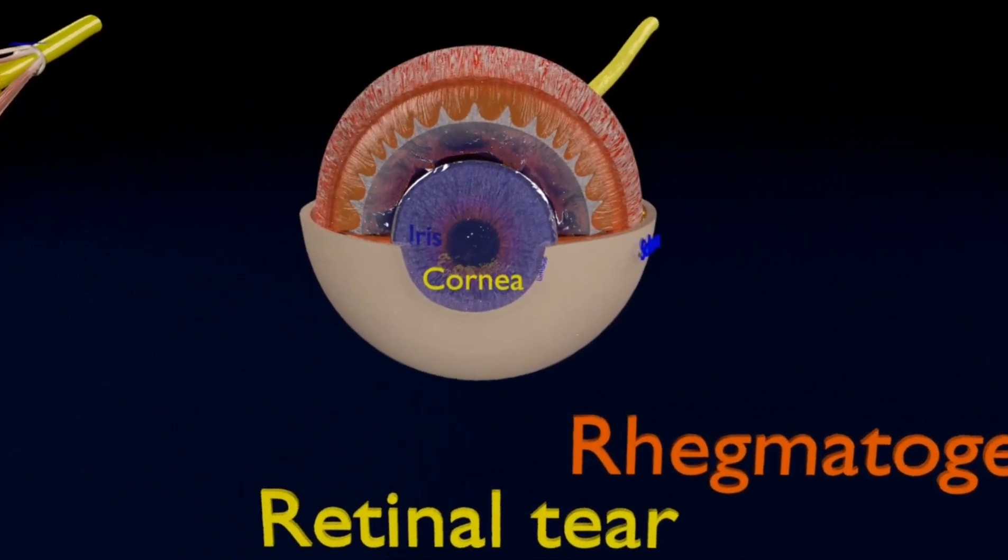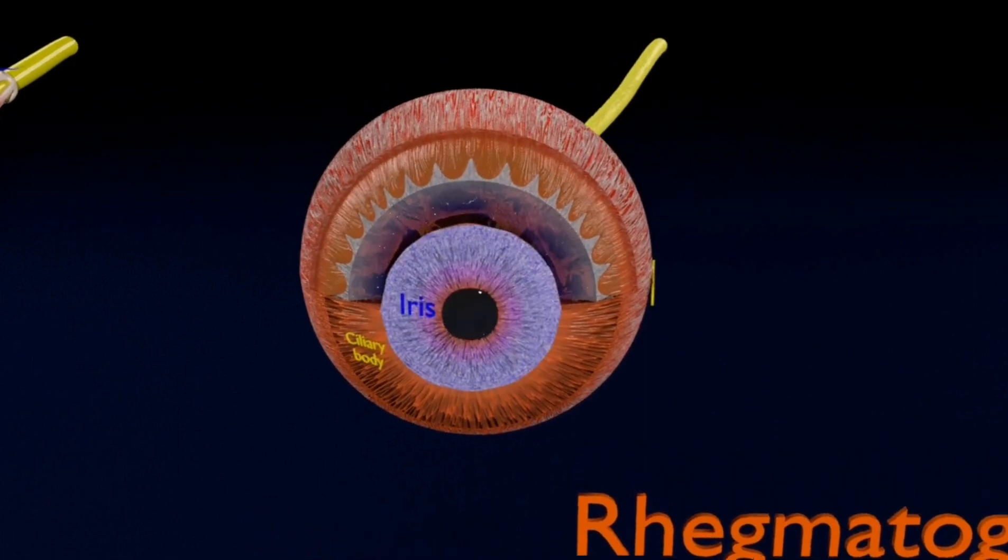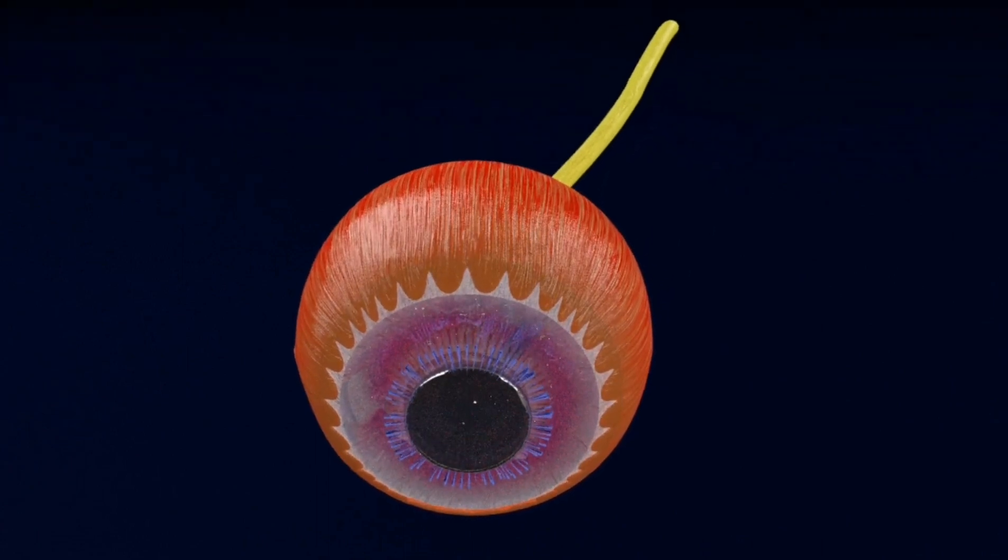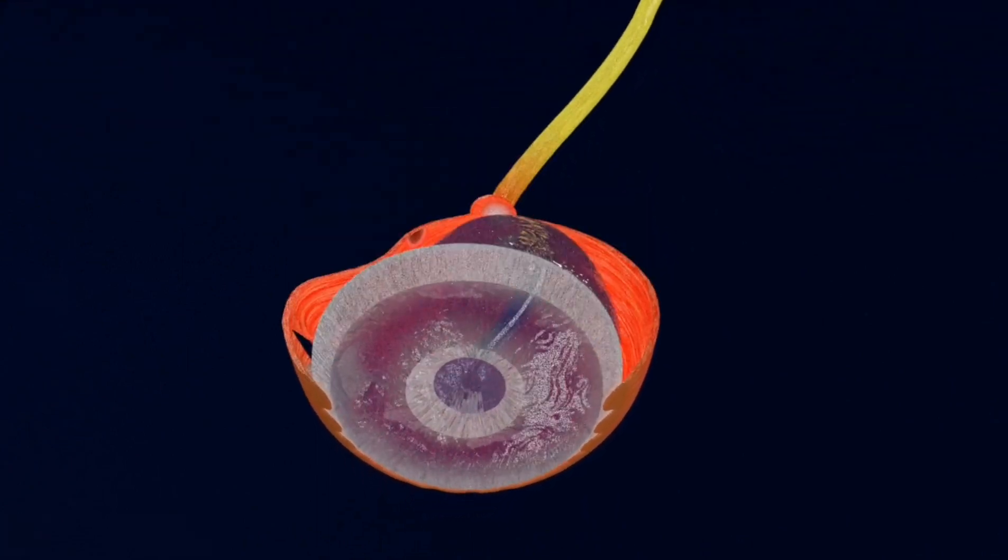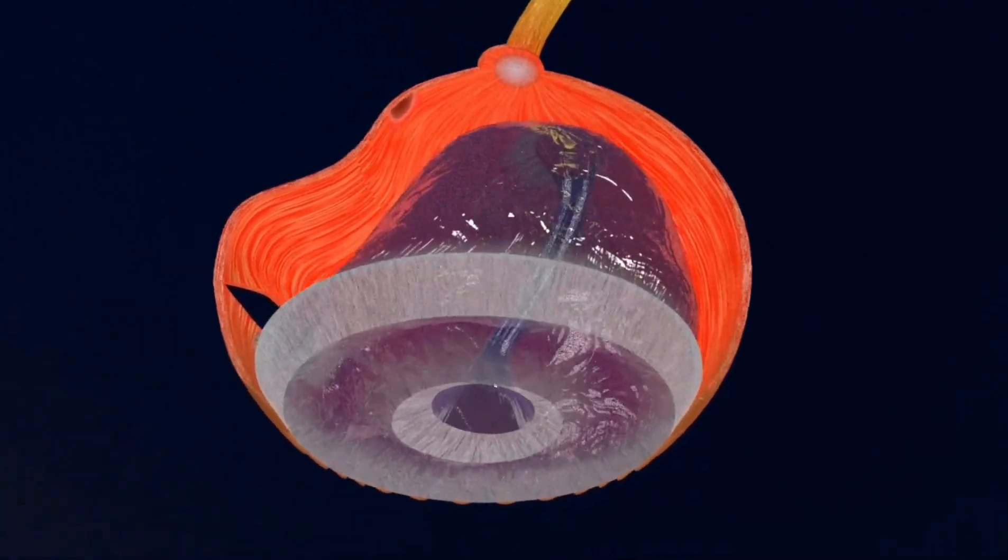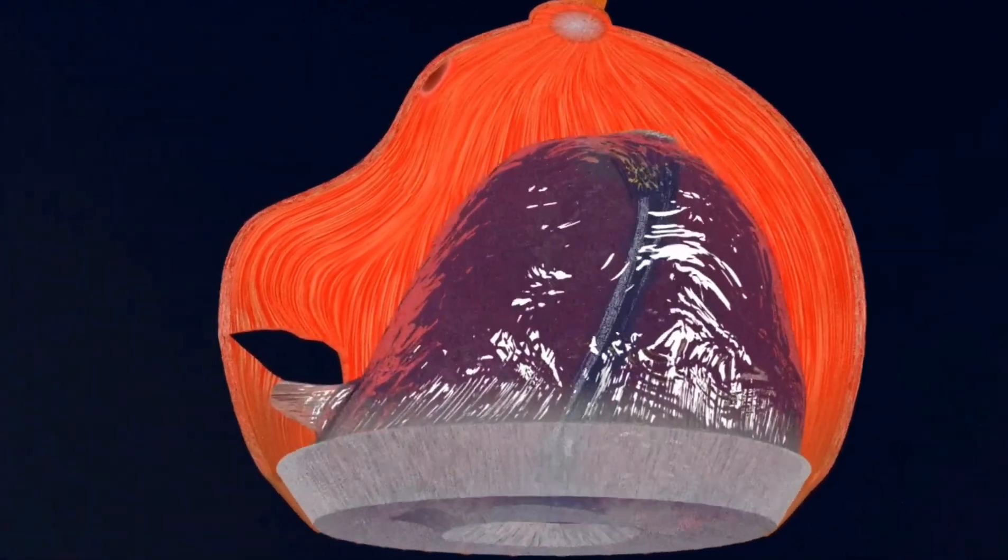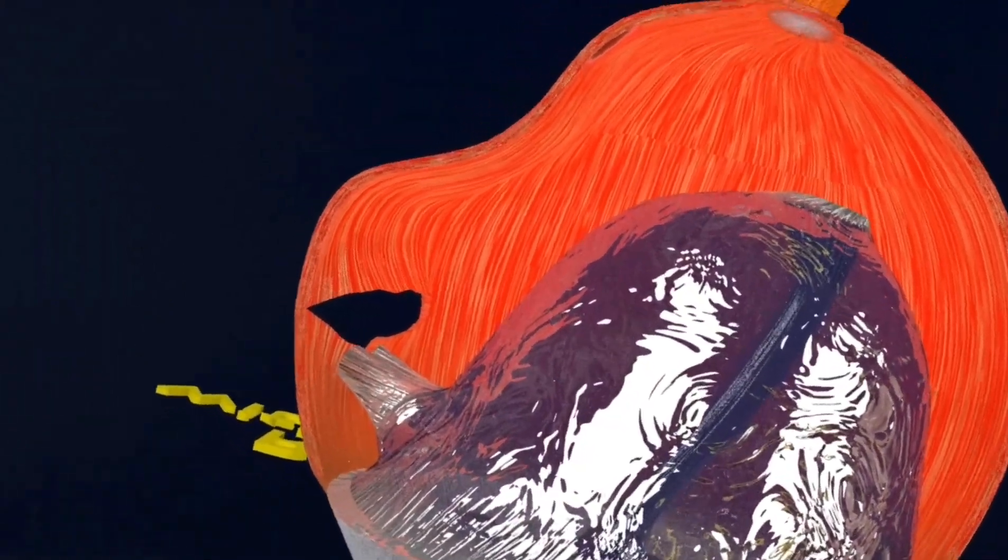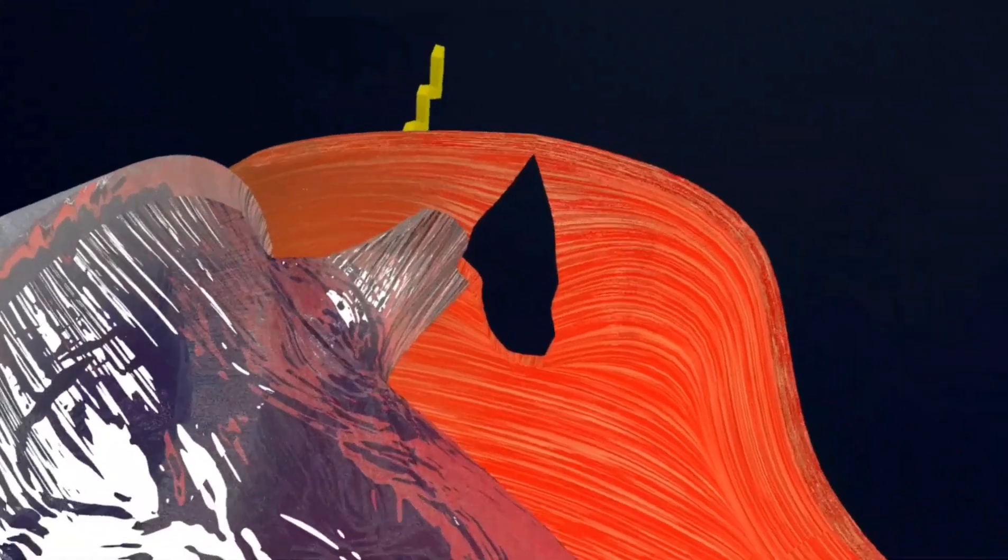When your retina has a tear or break, the gel-like fluid in the center of your eye, called the vitreous, can get behind your retina. The vitreous then pushes your retina away from the back of your eye, causing it to detach. As you can visualize, the vitreous is completely detached from the retina, and the retina is also torn.